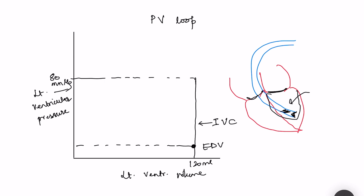When the ventricular pressure slightly exceeds the diastolic blood pressure, the semilunar valves open, and with this begins the ejection phase — blood starts moving out of the ventricle into the aorta. The volume starts decreasing, but the pressure actually continues to rise because the ventricles are still contracting with great force. Despite the ejection of blood into the aorta, the pressure continues to rise and reaches a maximum of 120 millimeter mercury — the systolic blood pressure, the maximum pressure attained during ventricular systole.